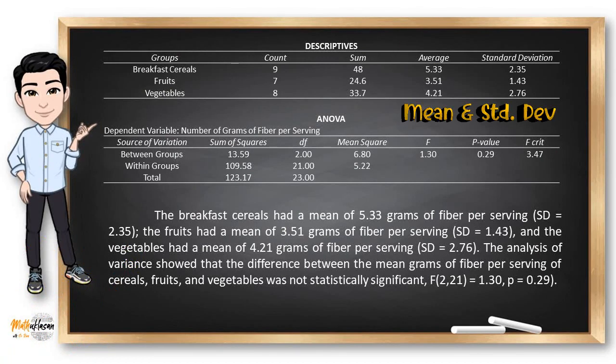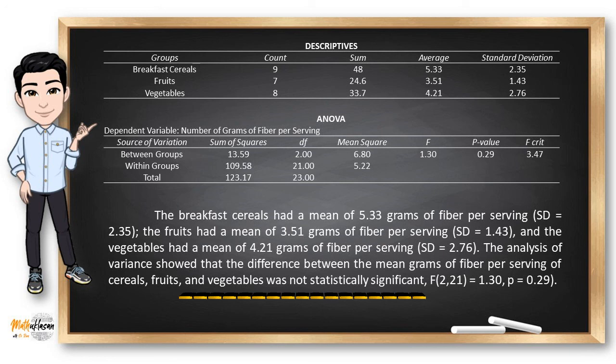As a summary, we can see here from the descriptives table that the breakfast cereals had a mean of 5.33 while it has a standard deviation of 2.35. The fruit has an average of 3.51 and a standard deviation of 1.43. SD here represents the standard deviation for each of the group. Now, the analysis of variance showed that the difference between the mean grams of fiber per serving of cereals, fruits, and vegetables was not statistically significant.